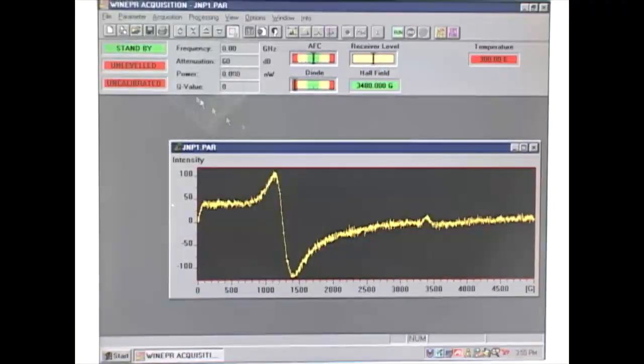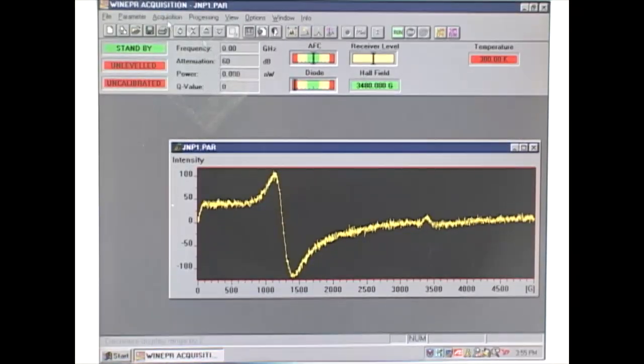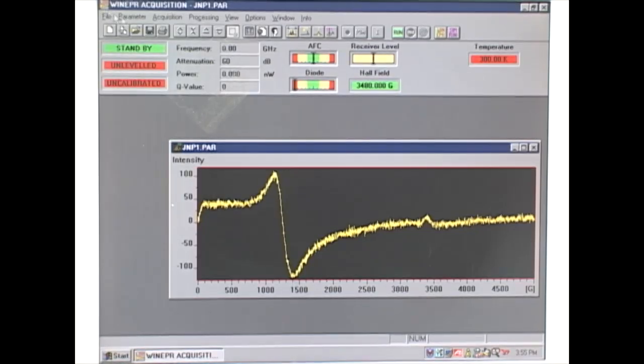What we have here is our nickel sample. We can conclude that the signal tells us this is a uniaxial anisotropy sample, meaning it has just one axis.